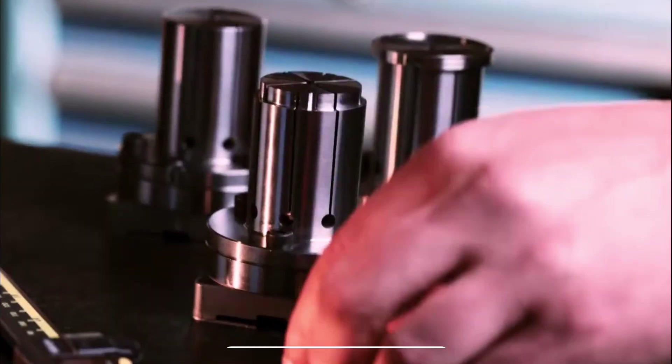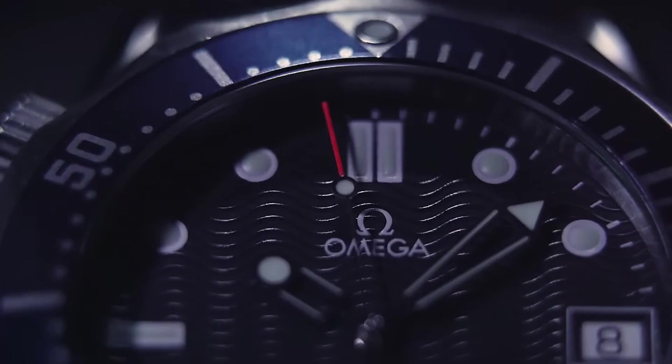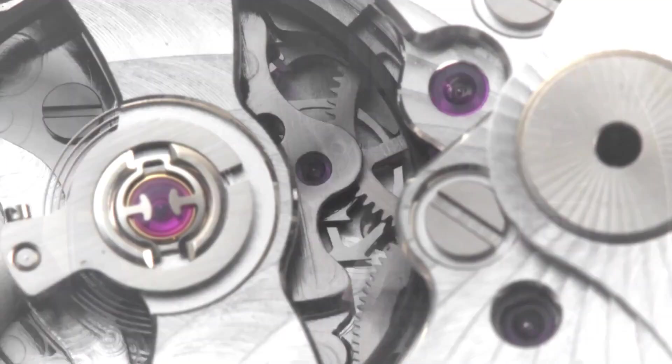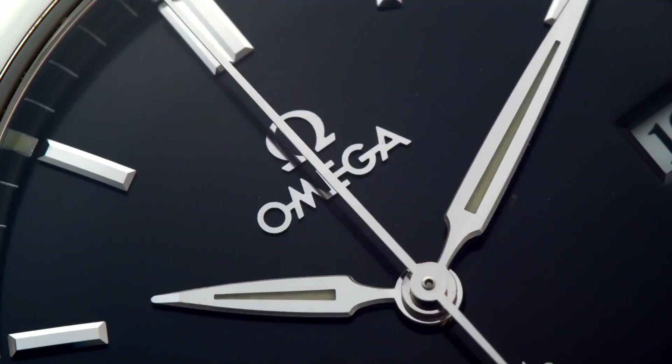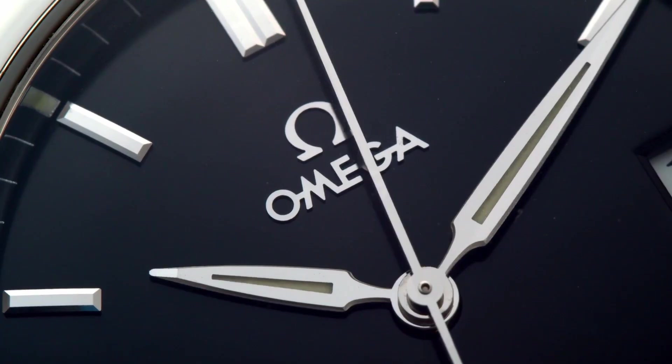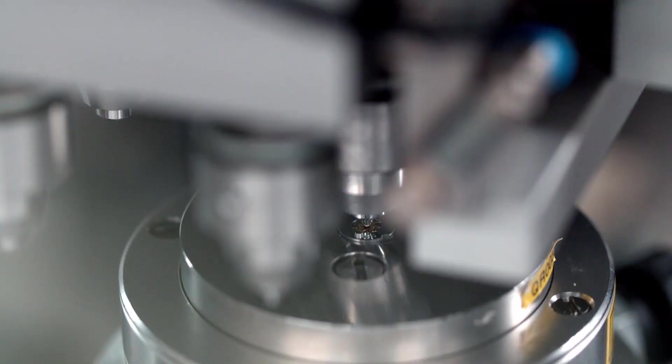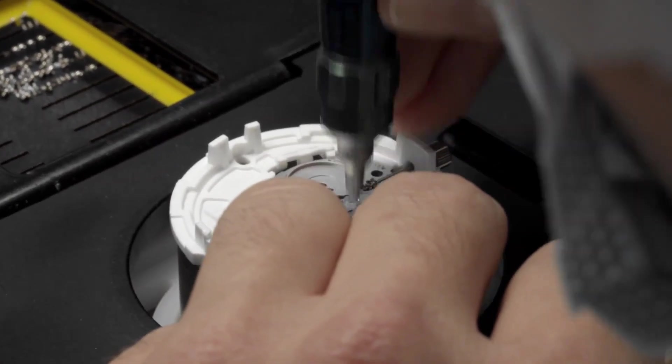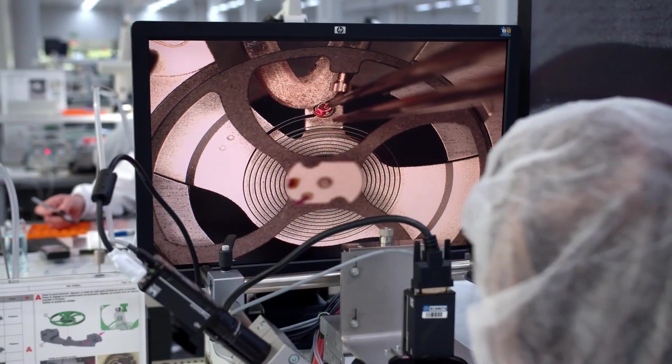Inside that polished shell lies time's beating mechanical heart. The case may define the body, but the movement defines the soul. At Omega, that soul is the coaxial escapement, one of the most important horological innovations of the last century. In sterile, dust-free rooms, watchmakers handle components smaller than a grain of rice. Wheels, gears, and jewels are machined to tolerances thinner than a single human hair.